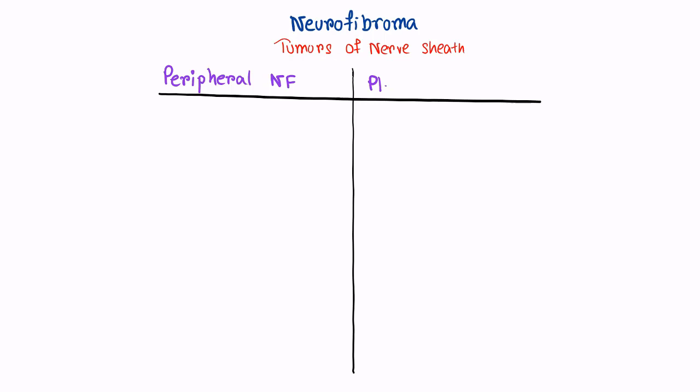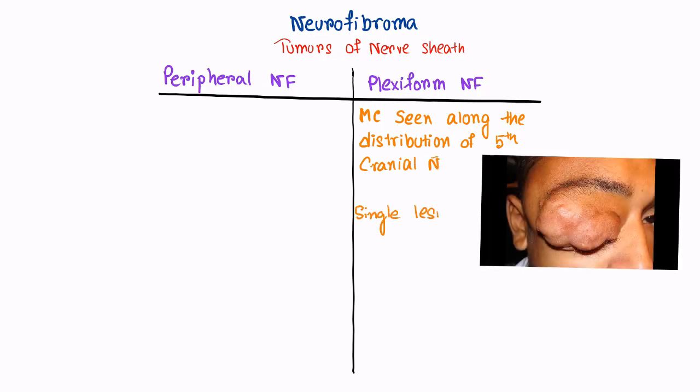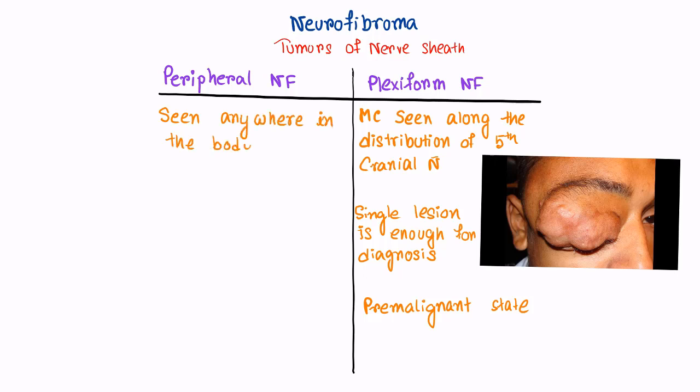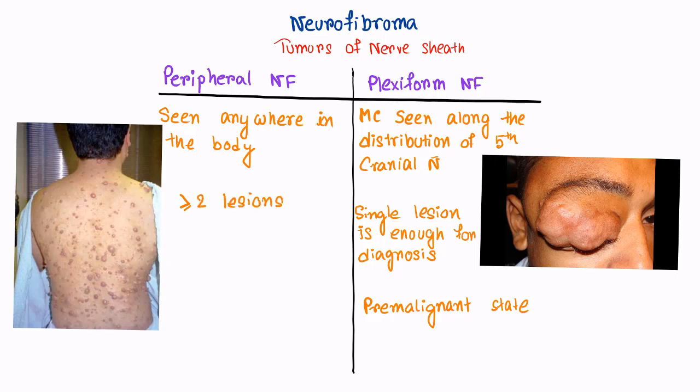The second criteria is Neurofibroma. Basically, these are tumors of nerve sheath. This Neurofibroma is of two types: Peripheral Neurofibroma and Plexiform Neurofibroma. Plexiform Neurofibromas are most commonly seen along the distribution of 5th cranial nerve. Single lesion is enough for diagnosis and these are pre-malignant state. On the other hand, peripheral neurofibromas can be seen anywhere in the body. More than 2 lesions are needed for diagnosis and these are non-cancerous.